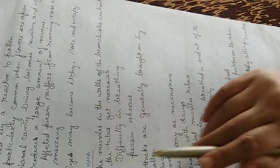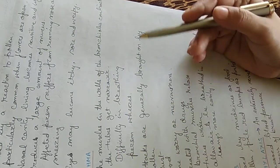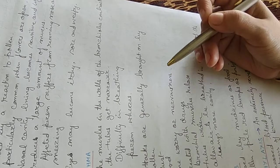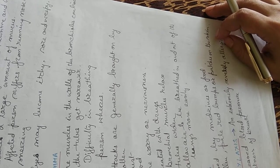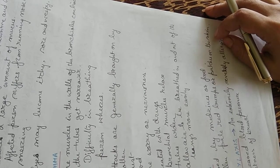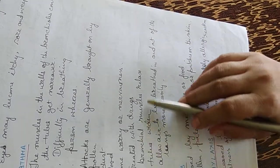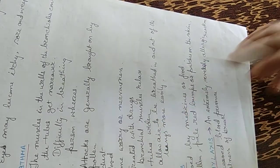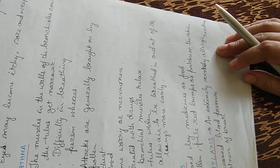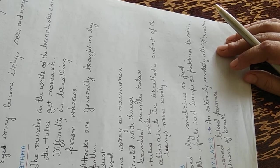In case of asthma, the muscles in the walls of the bronchioles contract and the tubes get narrower, which causes difficulty in breathing and the person starts wheezing. Attacks are generally brought by pollen, dust or some food. Sometimes it also occurs due to nervousness and worry. They are treated with drugs which relax the bronchial muscles, widen the tubes so that air can easily enter into the lungs and we can breathe in and out more easily.